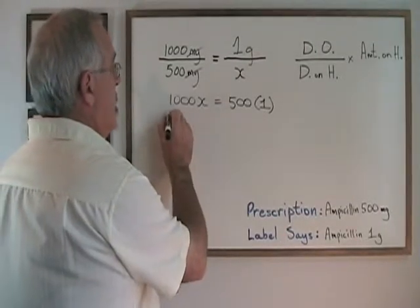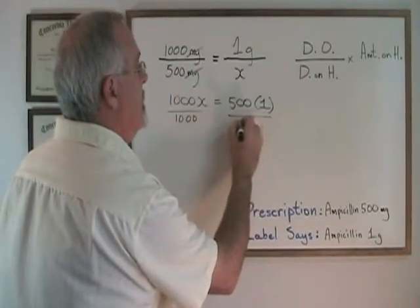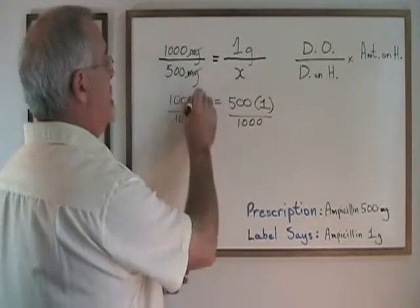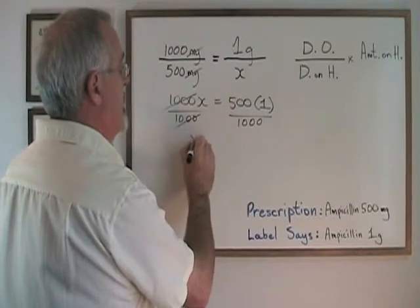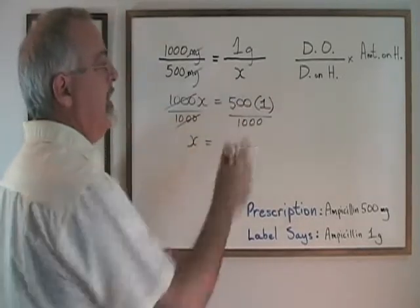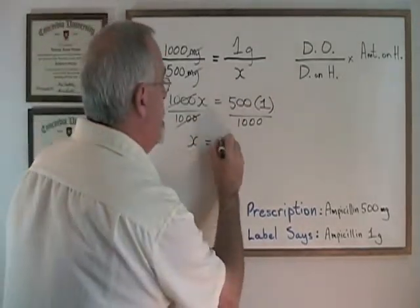Dividing both sides by 1000 to isolate my x, I get x is equal to 500 divided by 1000.